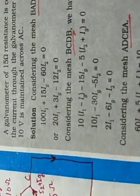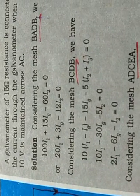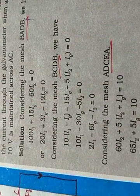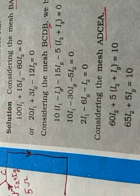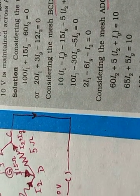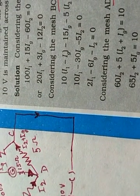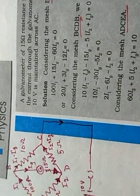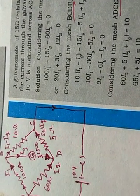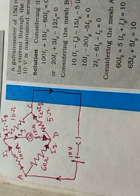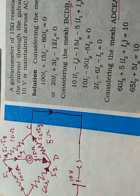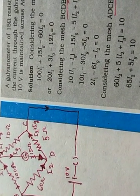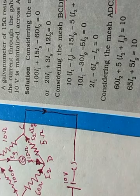So students, for the loop BADB, we get using Kirchhoff's law that 100 I1 plus 15 IG minus 60 I2 equal to 0. Because in this loop, there is no EMF applied, so we have on the right side EMF applied is 0. On the left side, you always remember, we use the format V is equal to IR.